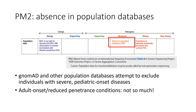Today, the most widely used population data resource is gnomAD, so we'll use it as the reference point for much of our discussion. gnomAD and many other population databases attempt to exclude individuals with severe pediatric onset diseases to get as close as possible to a cohort of individuals who represent the general population.